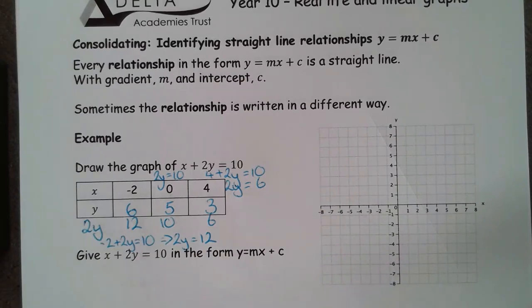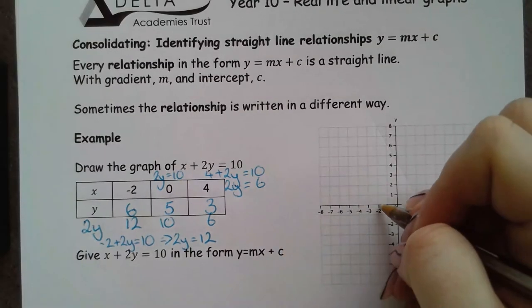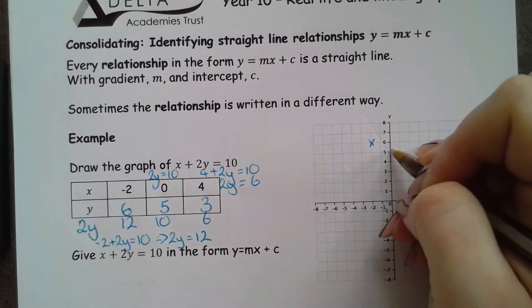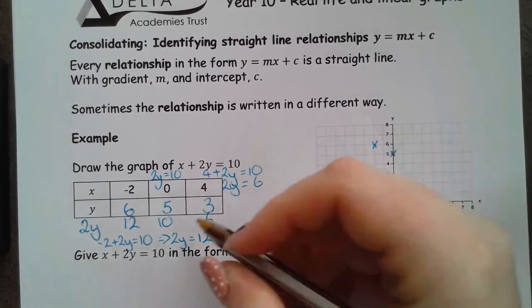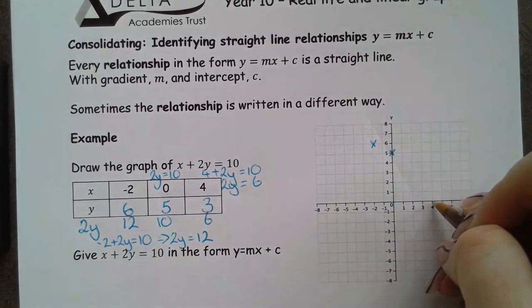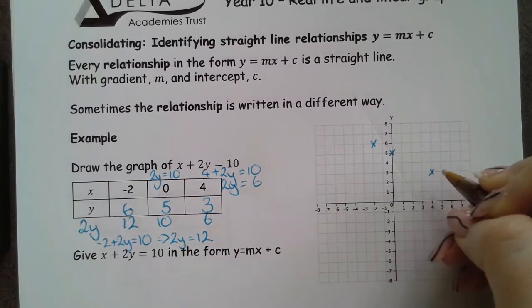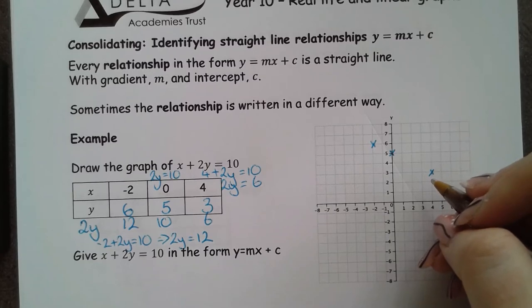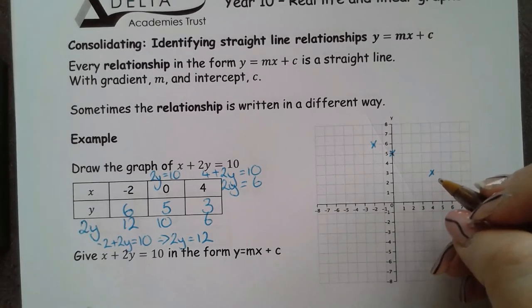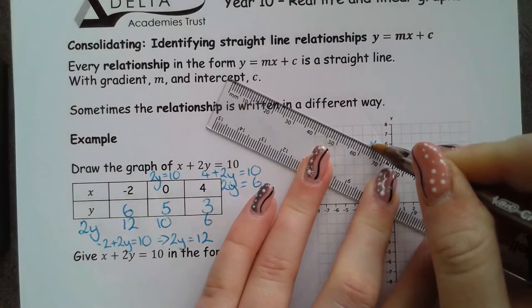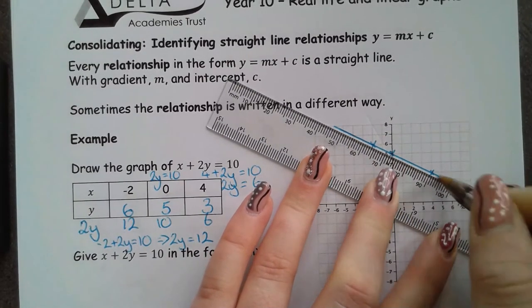I'm going to plot those coordinates just so we can see that on the graph. So, I've got negative 2 and I'm going up to 6. 0 going up to 5. 4 going up to 3.